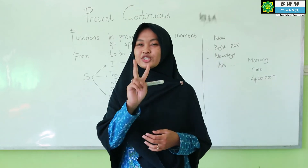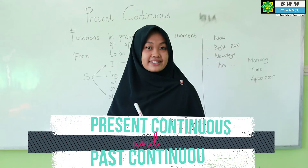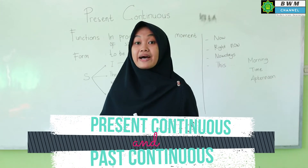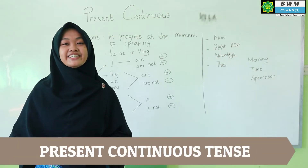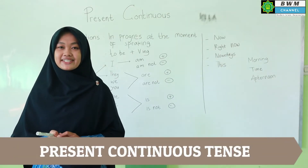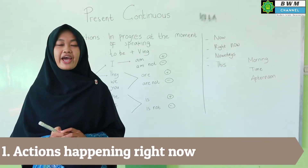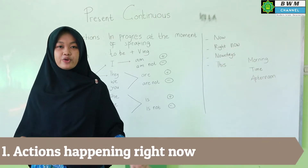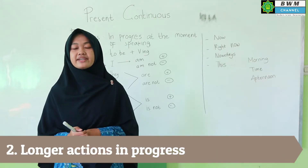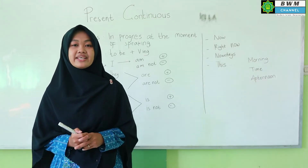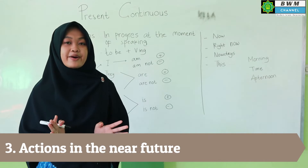In this chapter, I will teach you 2 tenses: Present Continuous Tense and Past Continuous Tense. Present Continuous Tense is used to describe things happening like now — learner actions in progress — and something happening in the near future.